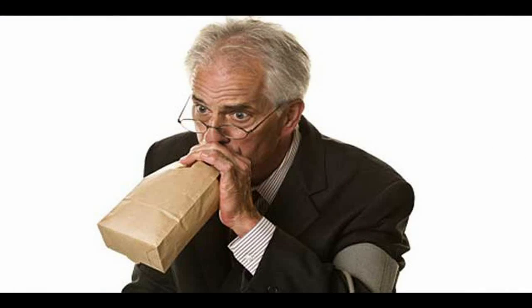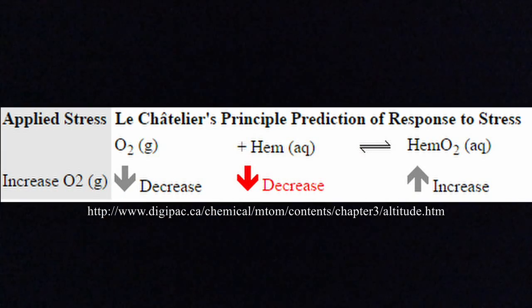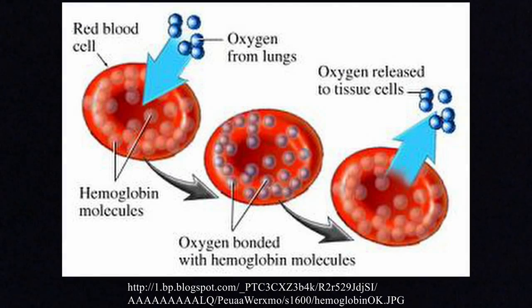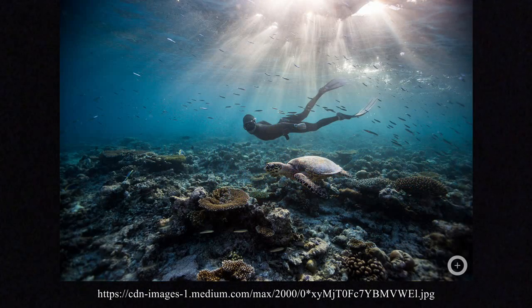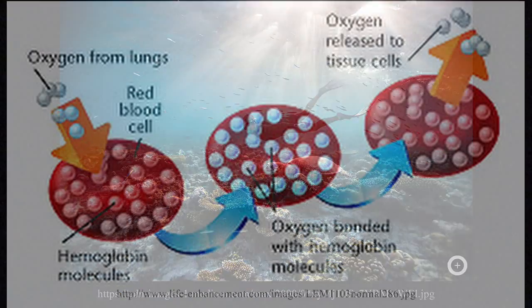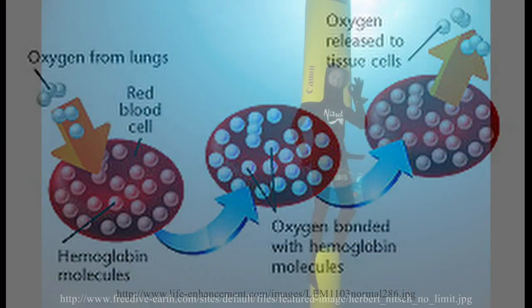On the opposite side, hyperventilation causes an increase in oxygen on the left side of the equation, causing a shift in equilibrium to the right. Since more oxygenated hemoglobin is created, a larger supply of it will last a longer time. Free divers use hyperventilation in this way, as this increase in oxygenated hemoglobin allows them to hold their breath for a very extended period of time.